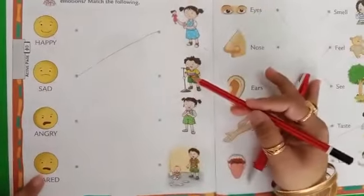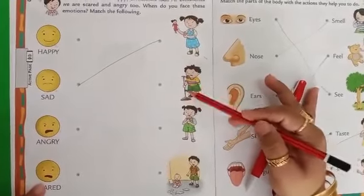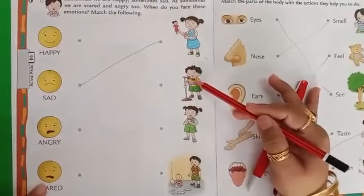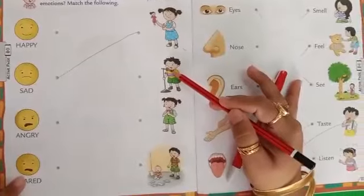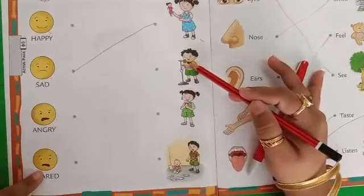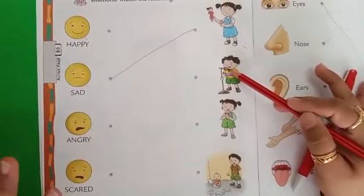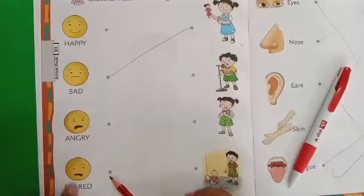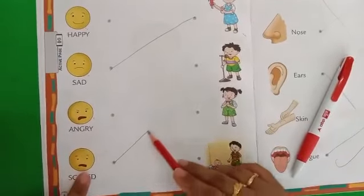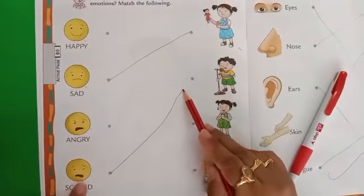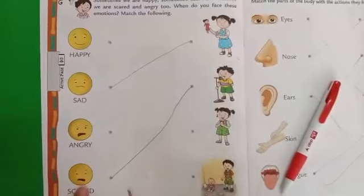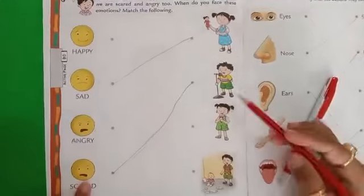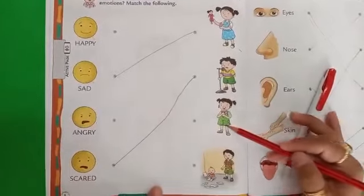Next, this boy is standing in front of a mic and speaking. A lot of times when we talk to someone, we get a little bit scared. So what emotion? Scared — the boy is right now a little bit scared. But I know my students are not scared; you can speak to everyone.